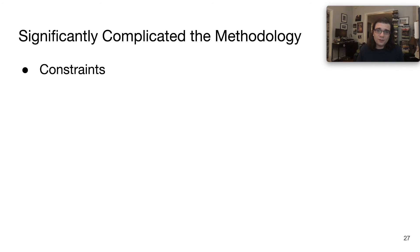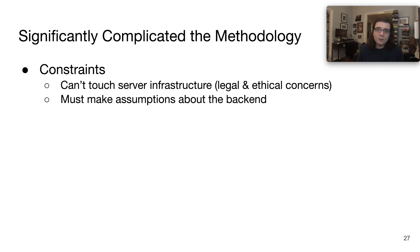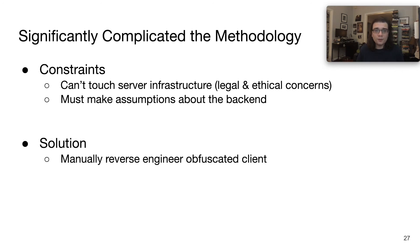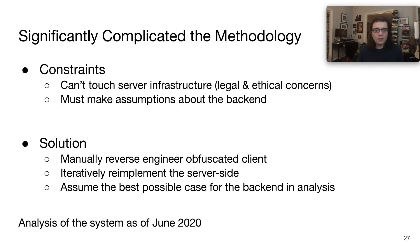This led to a number of constraints. A key challenge was that we really couldn't touch their server infrastructure for a number of legal and ethical concerns. Therefore, we had to make a number of assumptions about how their backend worked. Our solution was to mainly reverse-engineer the client, and then iteratively re-implement the server side to better understand the protocol. To be charitable to them, we assumed the best possible case for the backend in our analysis, and whenever we deviated from this assumption, we explicitly discussed why in the paper. What I'm about to present is an analysis of the system as of June 2020, and we make no claims about anything they've done since.